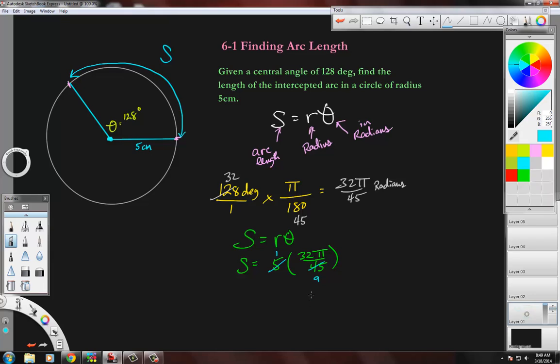What I would do on a problem like this is just take five times 32 times pi, hit equals, and divide that whole thing by 45. If you do, your answer should be somewhere around 11.2 centimeters. So this arc length, this distance here, is 11.2 centimeters long.